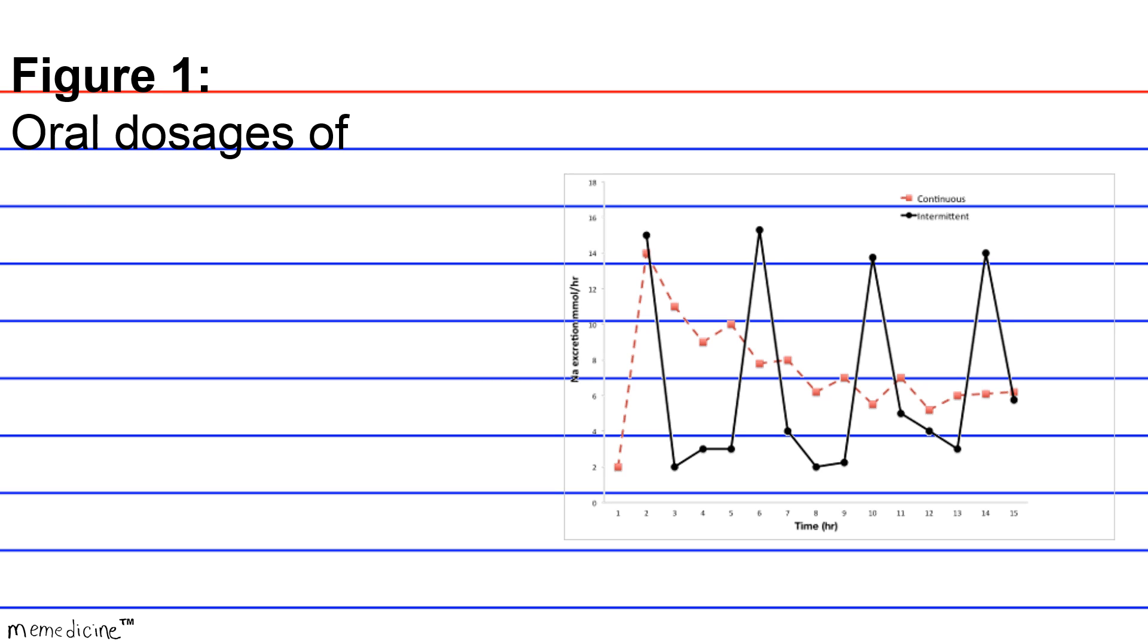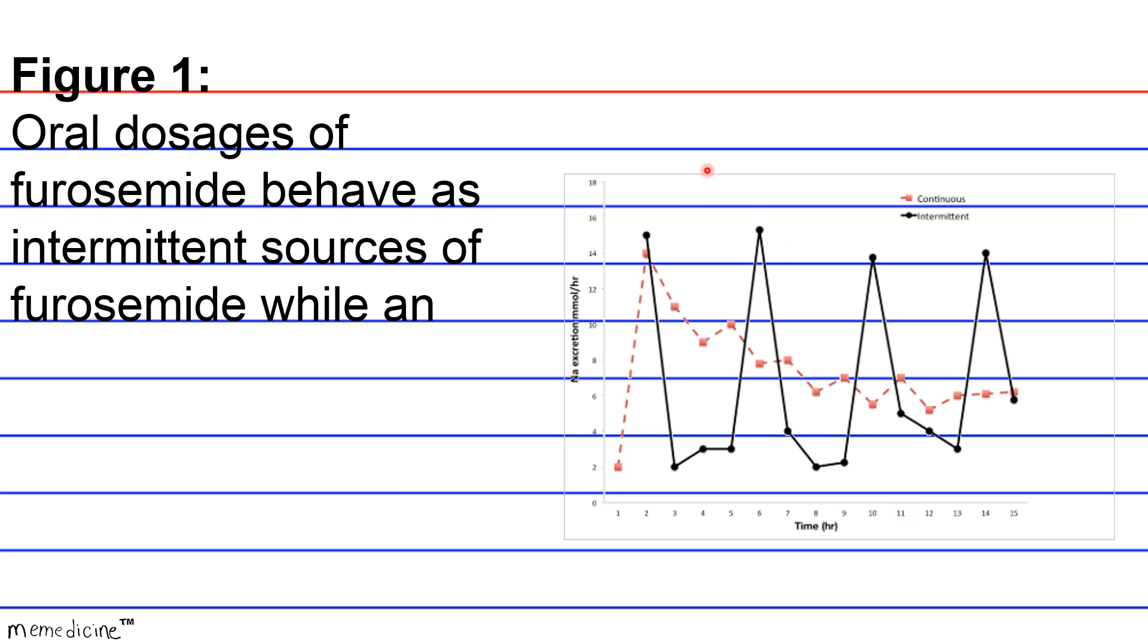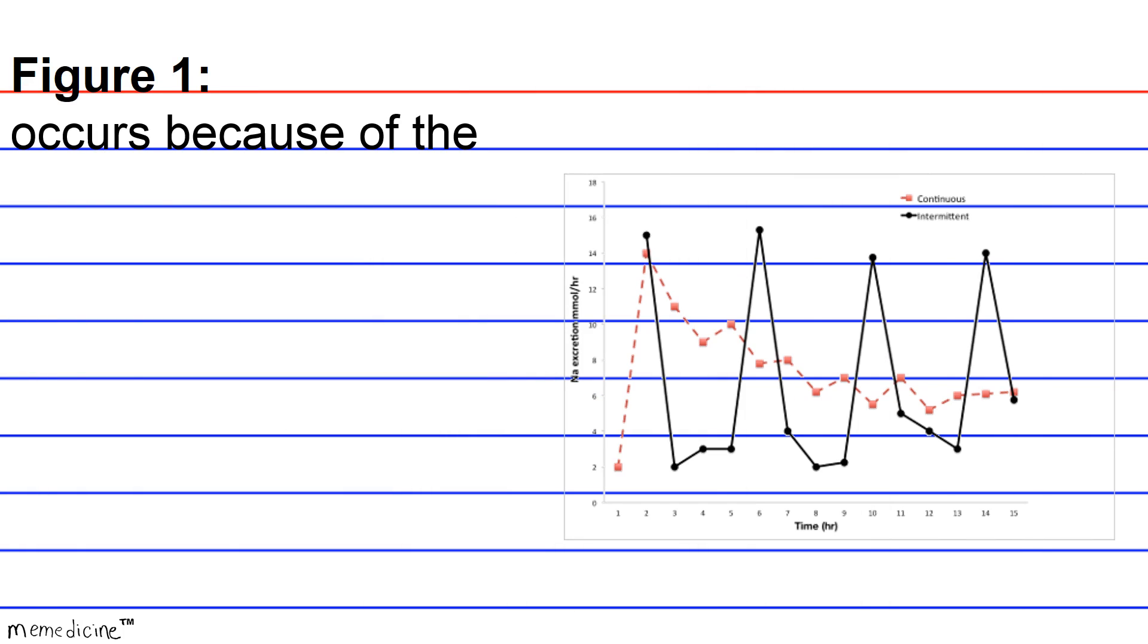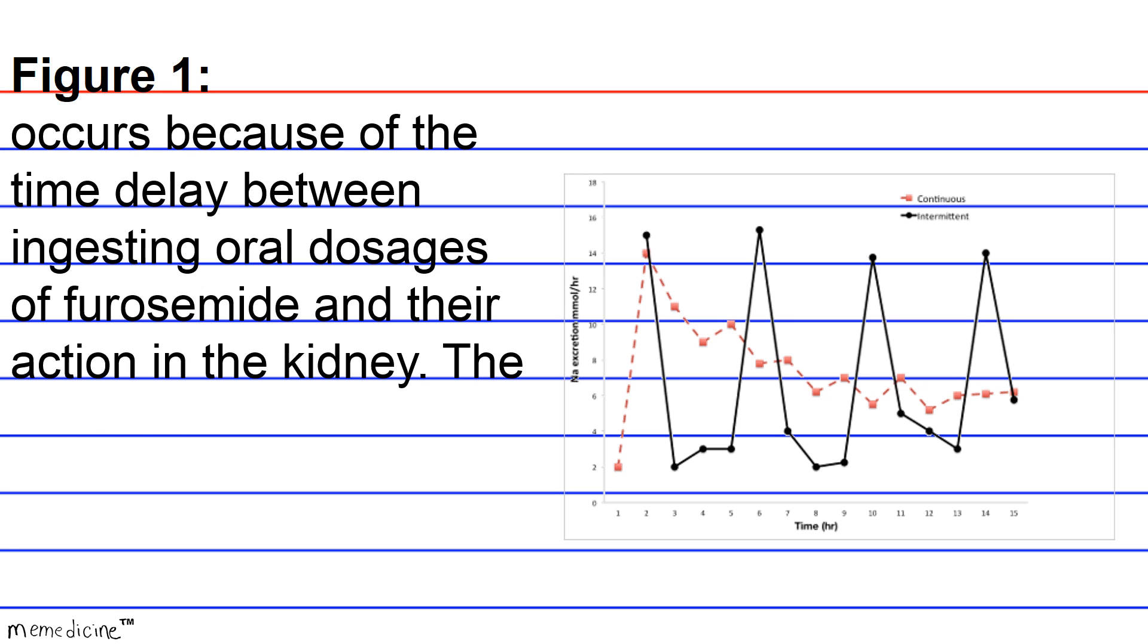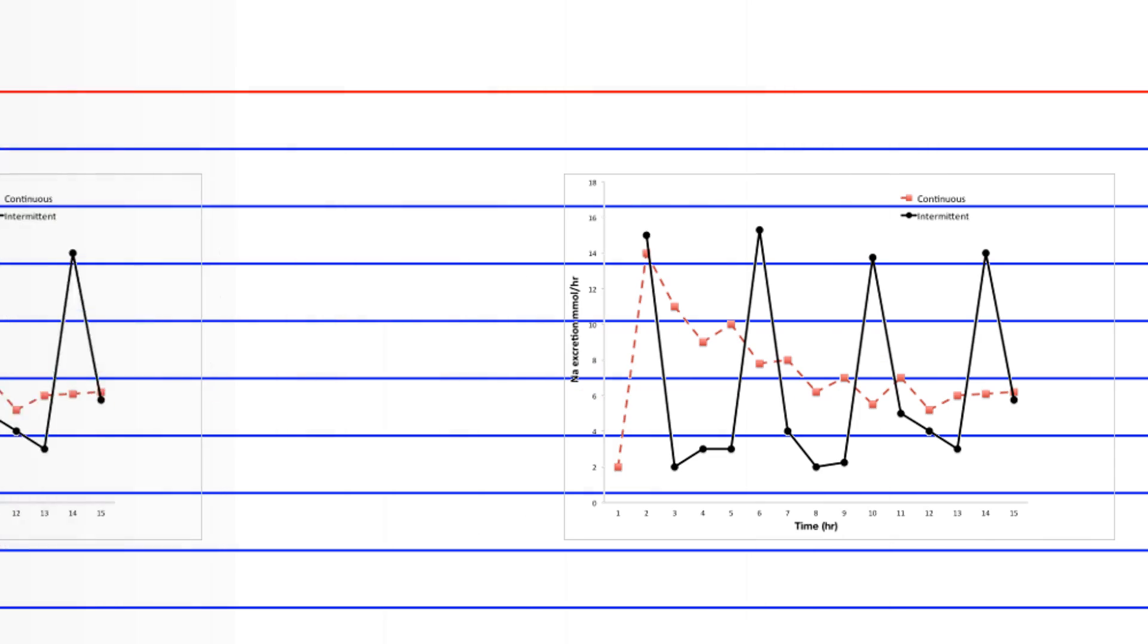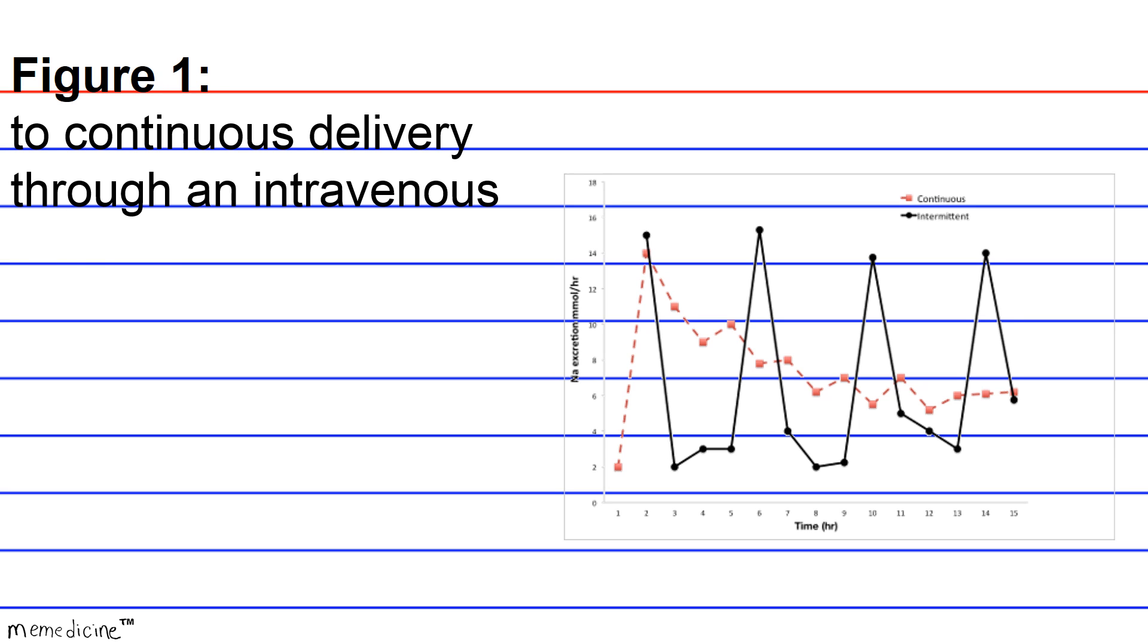Figure 1: Oral dosage of furosemide behaves as intermittent sources of furosemide, seen in the dark bold line, while an intravenous injection of furosemide delivers continuous, seen in the dashed line, delivery of furosemide. This intermittent behavior occurs because of the time delay between ingesting oral dosages of furosemide and their action in the kidney. The spikes of intermittent oral dosages cause 18.5% less millimoles of sodium per hour compared to continuous delivery through an intravenous injection.